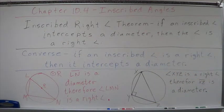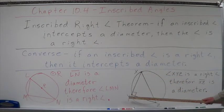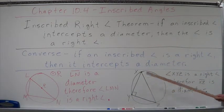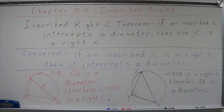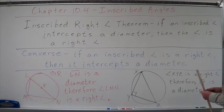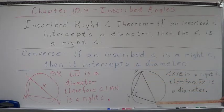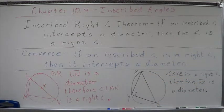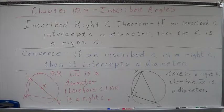I have another example. I have angle XYZ. I don't know where the diameter is, but I know that angle XYZ is a right angle. Therefore, segment XZ is a diameter. Because if you have an inscribed angle of a circle that is a right angle, it is going to intercept a diameter.